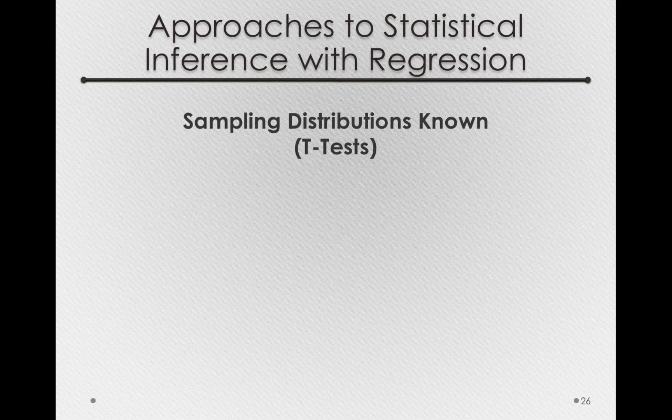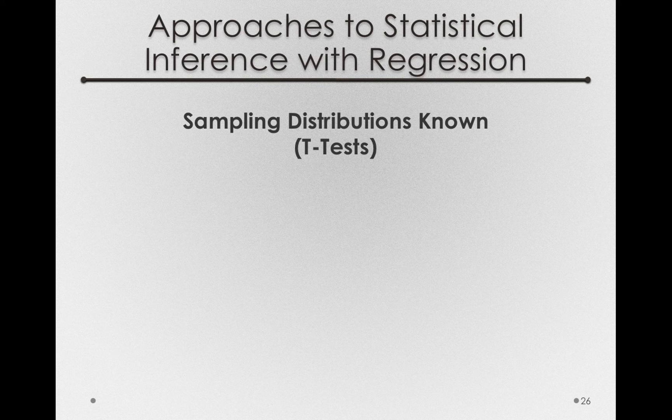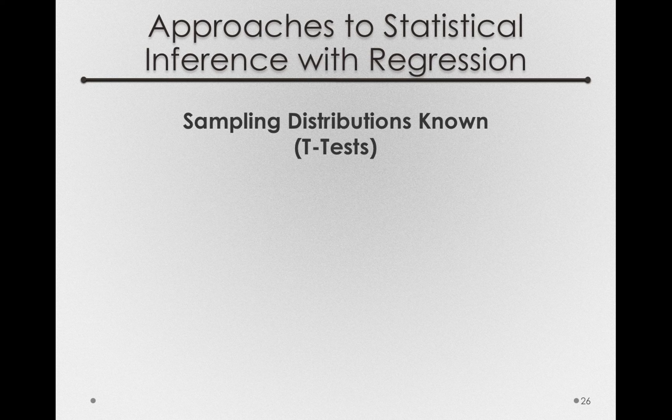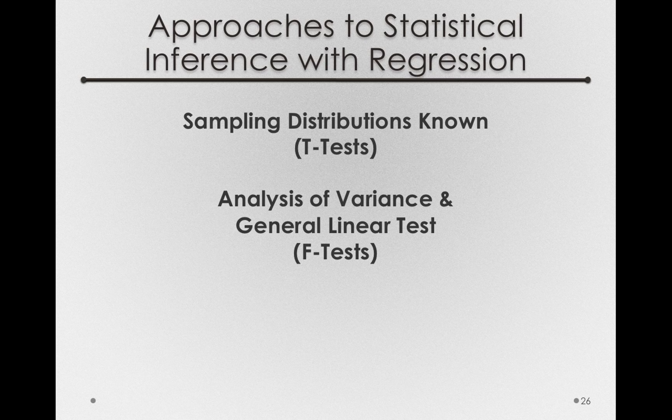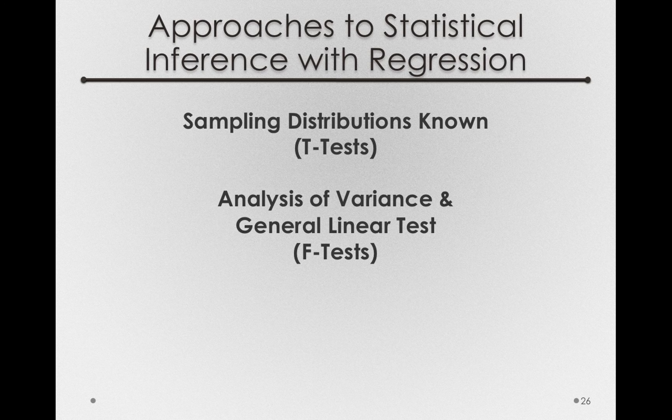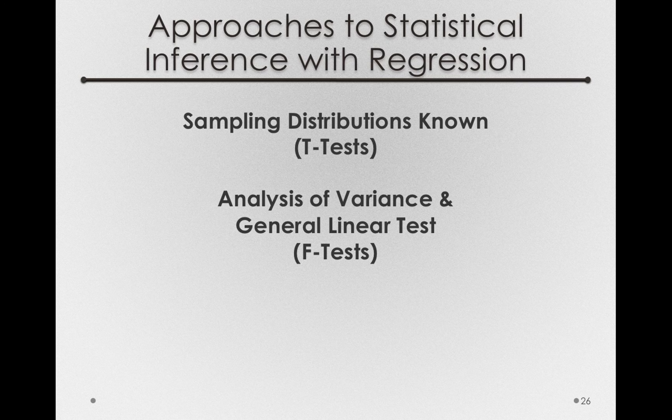And there will be two different ways we'll talk about approaching these tests. The first are sampling distribution known tests. And it turns out we'll be able to use the t-tests and the logic of t-tests we discussed before. Now the second way of analyzing these is using the analysis of variance and general linear tests. So these are f-tests approach that in essence work the same way as our previous linear models. We'll be partitioning the variance in y into one part that's due to error and another part that's due to the predictability of the line. We'll start in the next video with sampling distributions known and the t-tests.